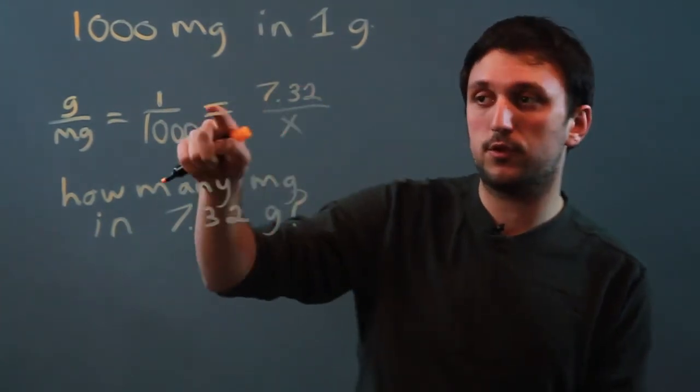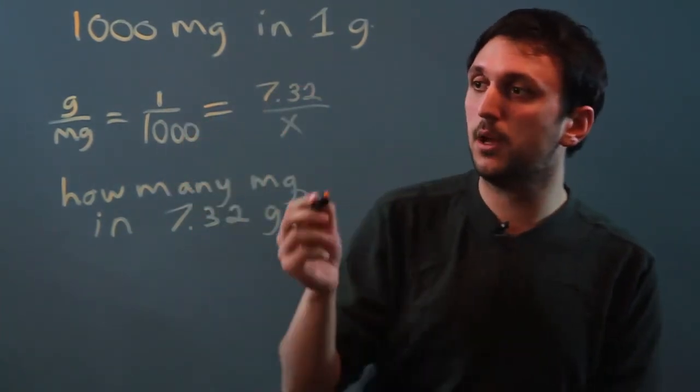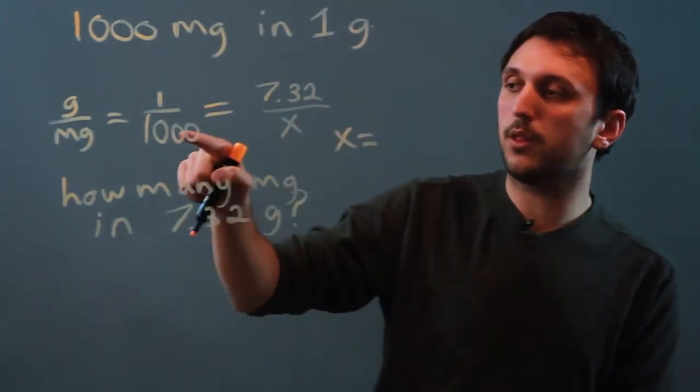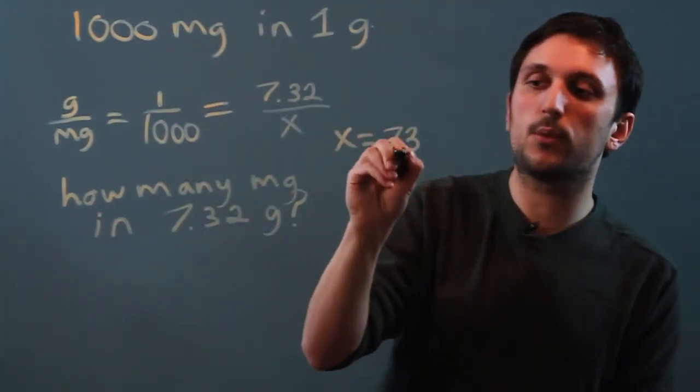Now, we have fraction, fraction, equal sign, so we cross multiply. So, we get x equals 7.32 times a thousand, which is 7,320.